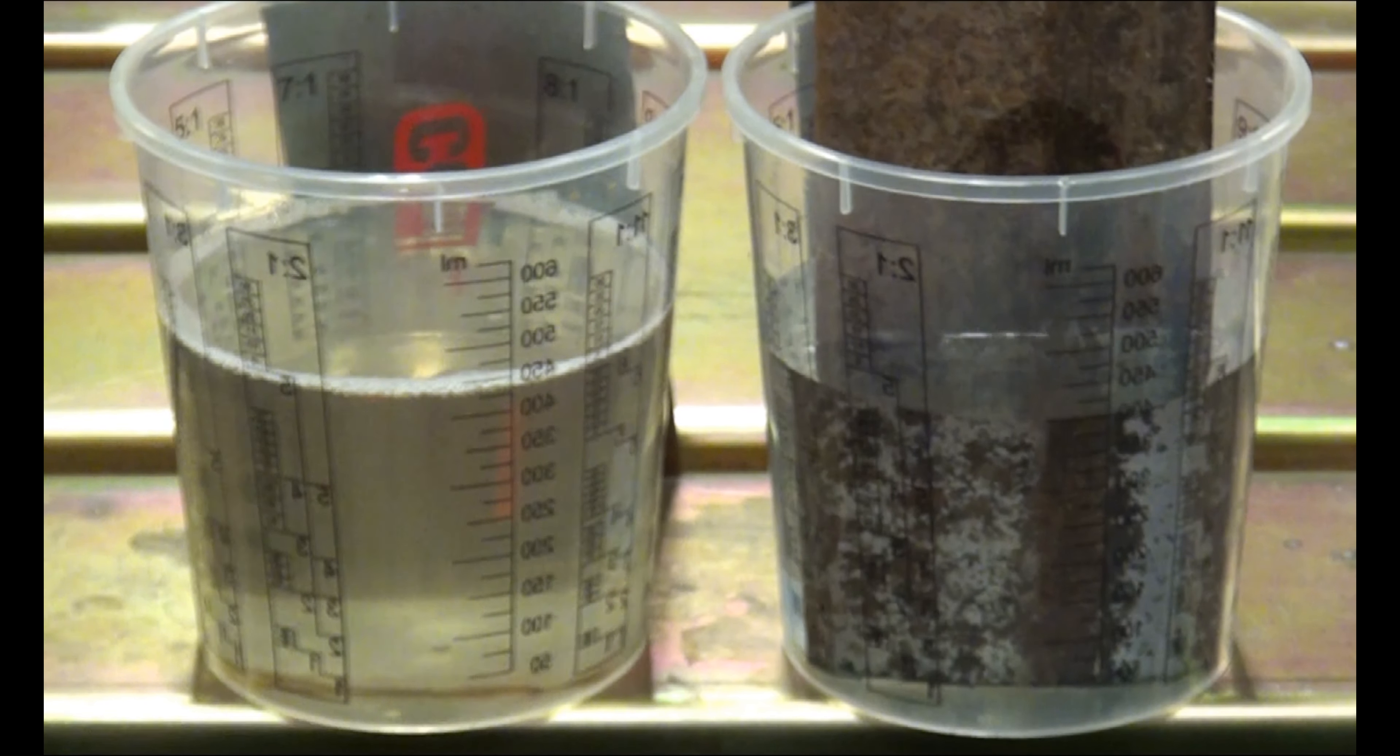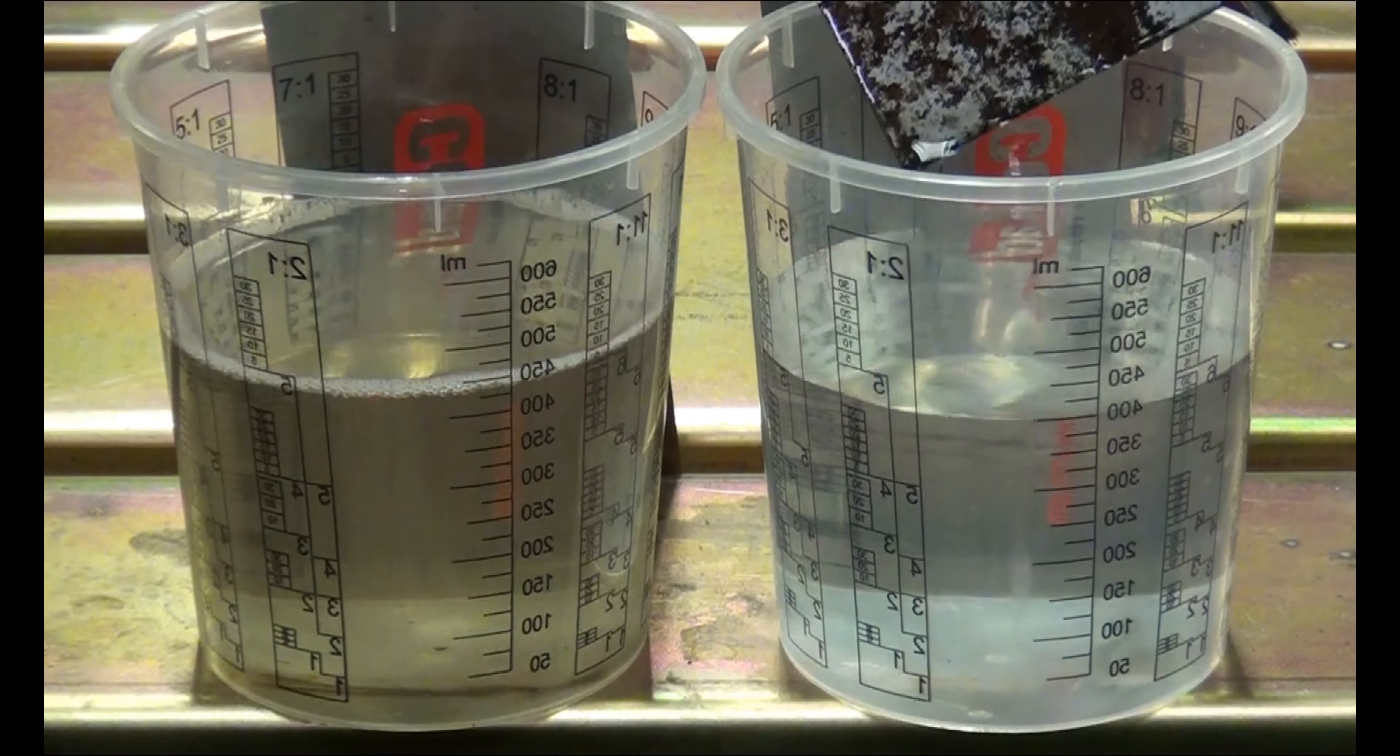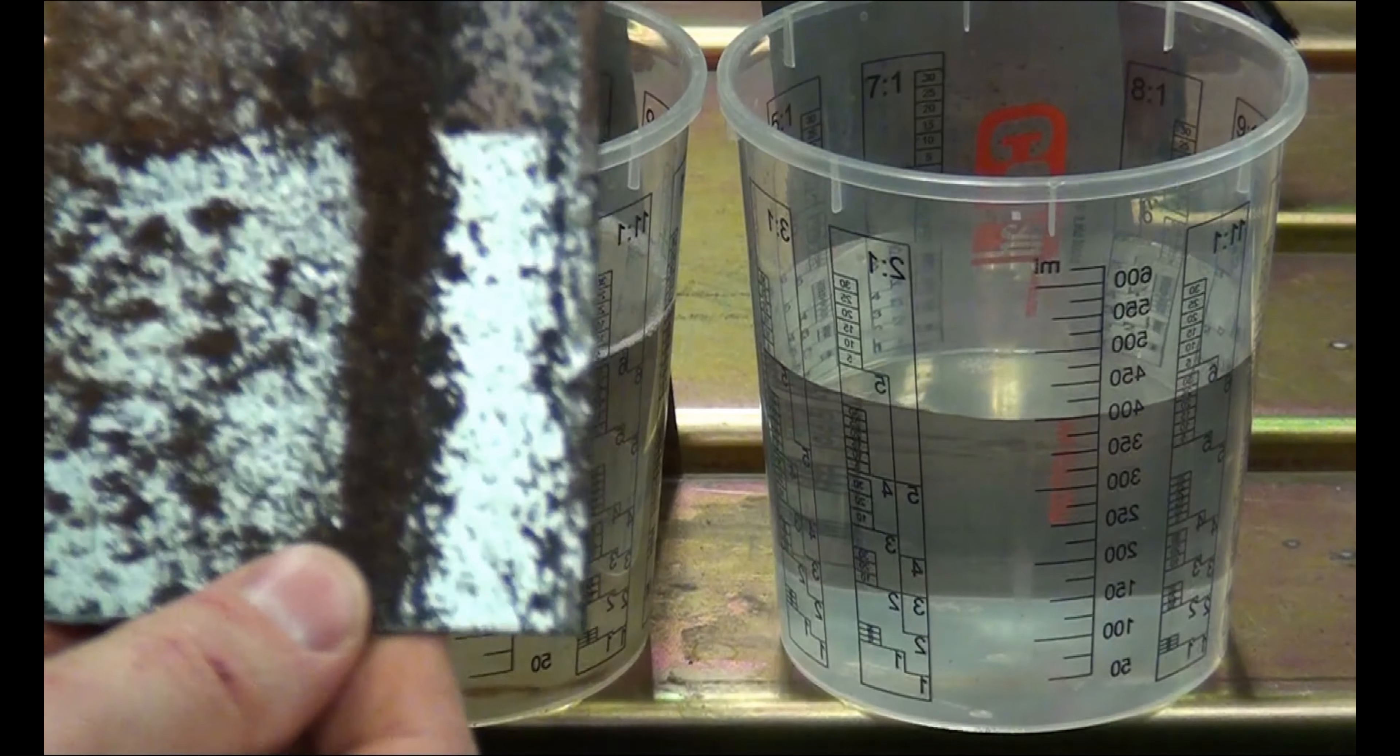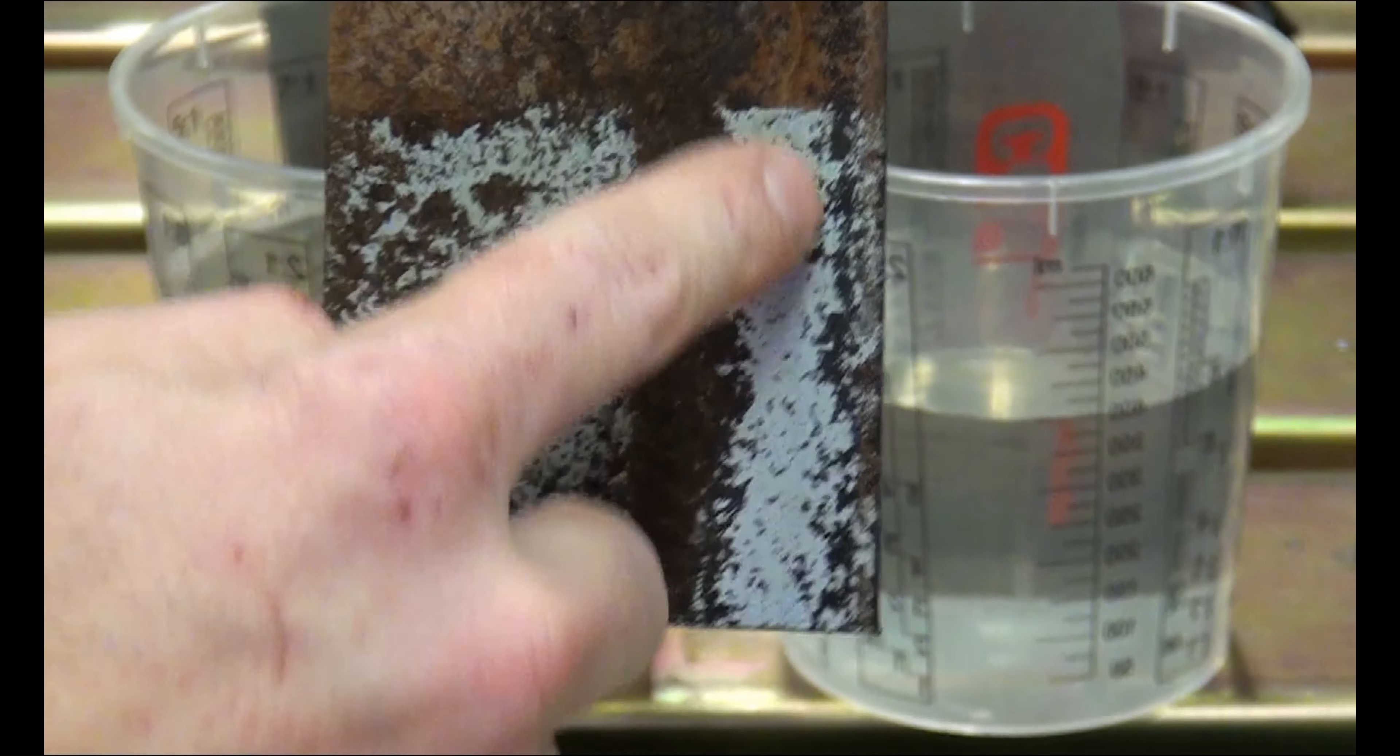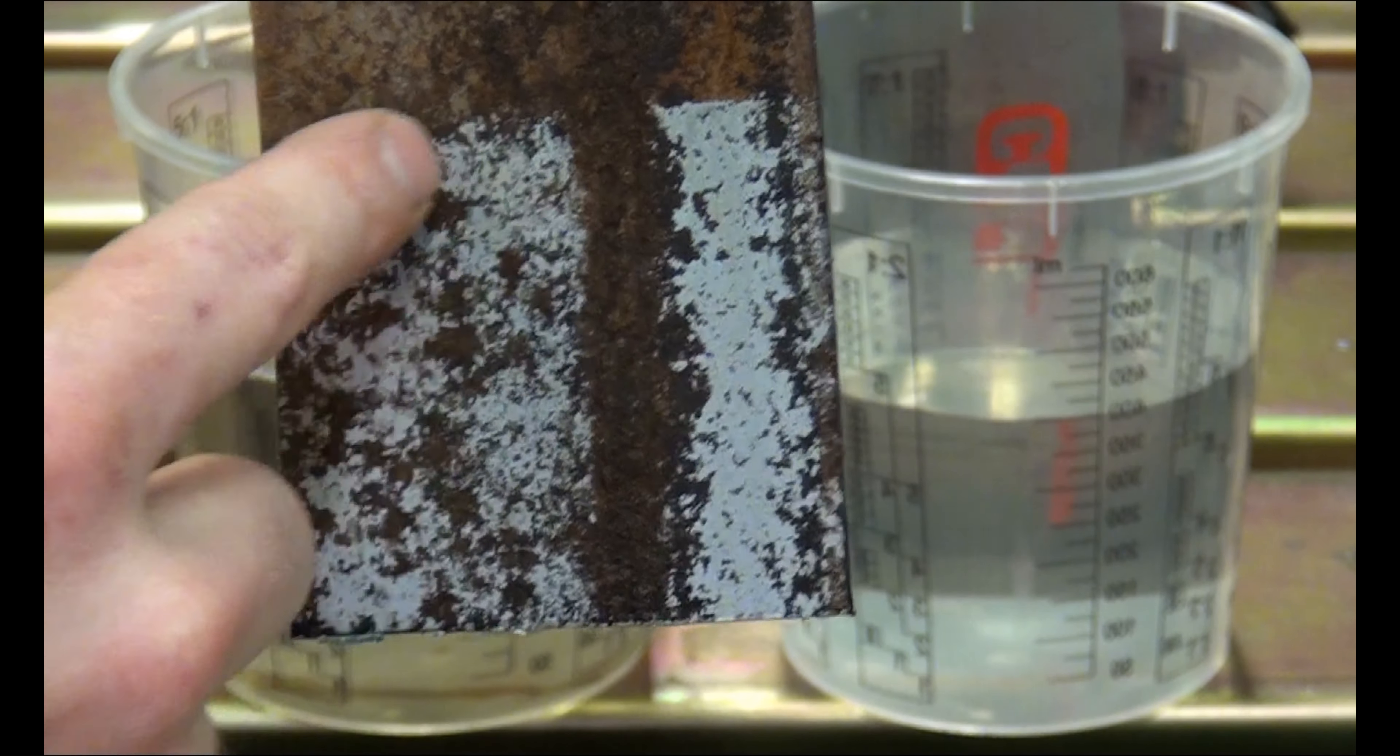Now we're going to look at the Rust 911 and do the same thing. Here you can see it. Obviously, again, the line across here where it was in the solution. There are some areas starting to turn black a little bit on this side. The light rust came out, but there's still a lot of rust left on here to be removed.